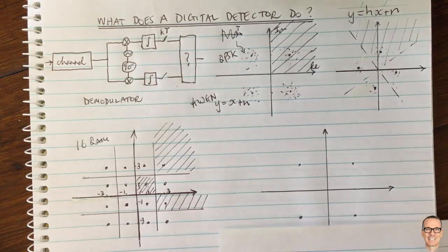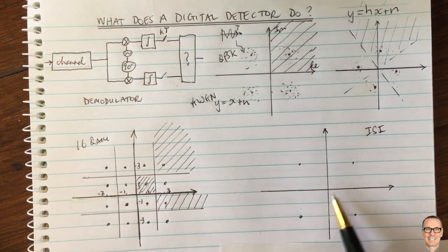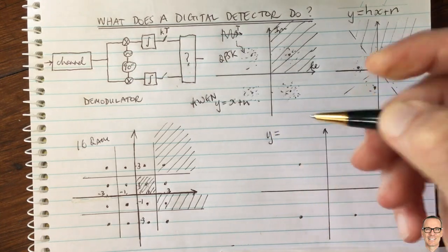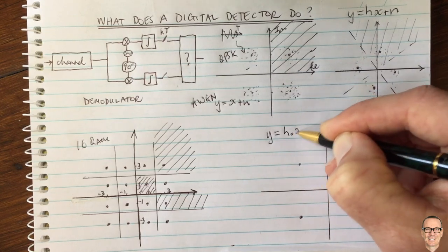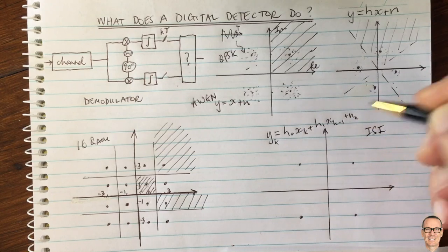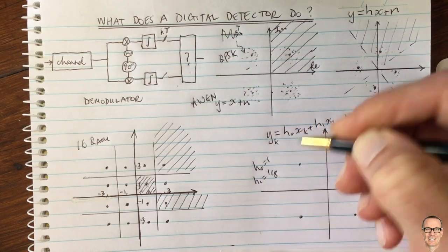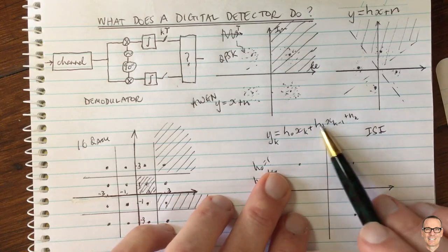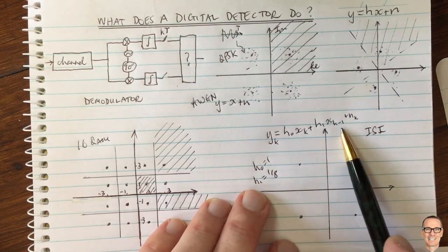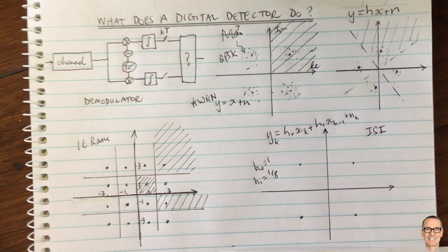Another example is inter-symbol interference (ISI), which gives possibly the most general case. With two ISI components: Y at time k equals h0 times X(k) plus h1 times X(k−1) plus noise. For h0 equals 1 and h1 equals 1/8, if there were no ISI you'd have the standard QPSK constellation points. But h1 equals 1/8 adds an extra component, so you no longer receive points at those original locations — they're interfered with by the previous symbol.